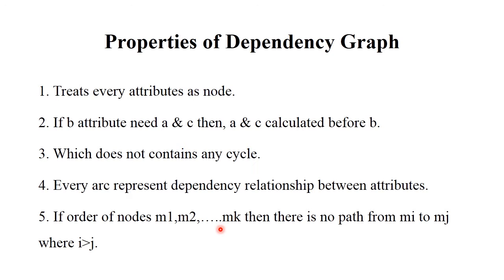In an order of nodes m1, m2, up to mk, there is no path from mi to mj where i is greater than j. This means the graph is generated in top to bottom or bottom to top manner and does not contain any cycle.